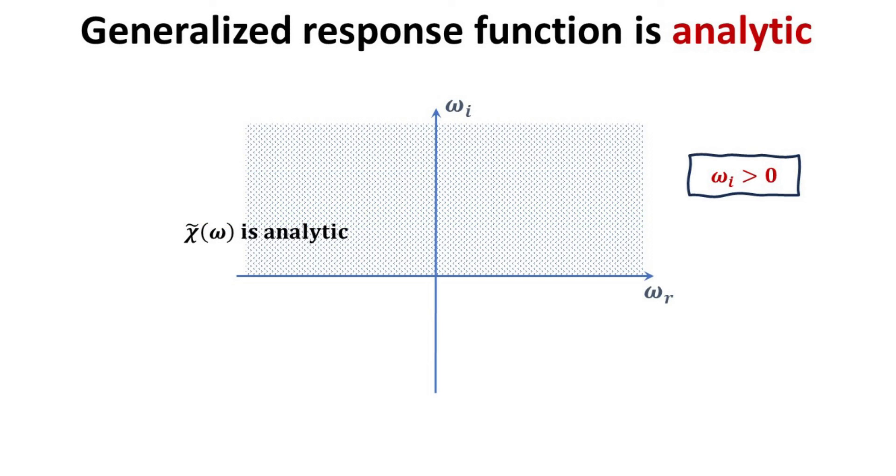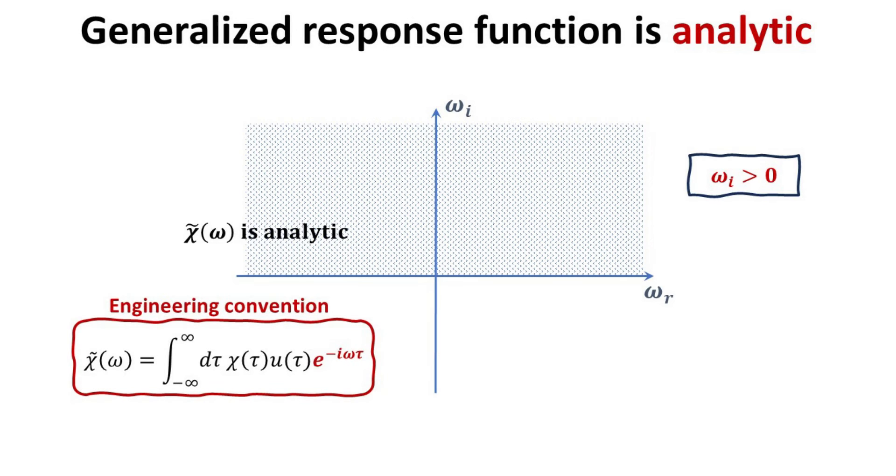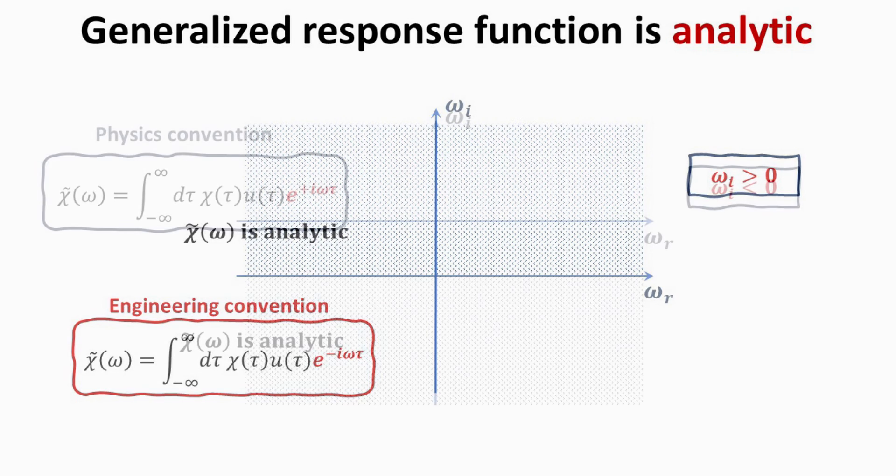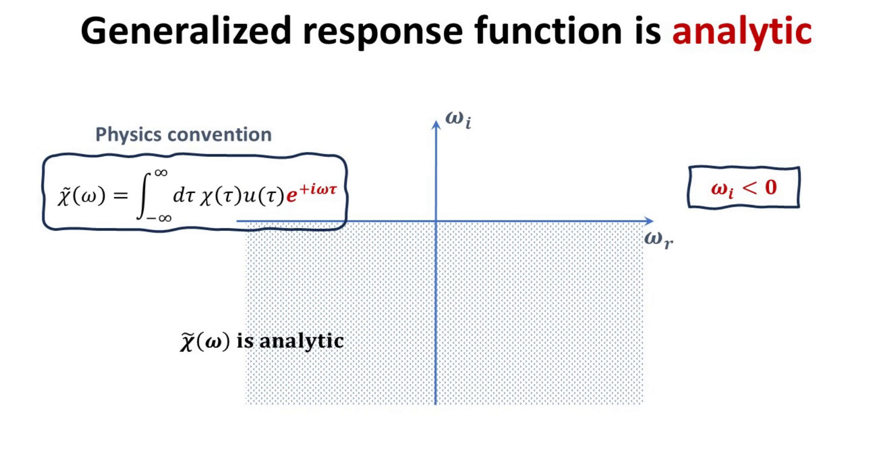Lastly, one can prove that chi tilde is analytic over the upper complex omega plane. In other words, it satisfies the Cauchy-Riemann relations when omega i is positive. Note that we have used the engineering convention for Fourier transform in this case. If we had chosen the physics Fourier transform convention instead, then omega i would have to be negative for the generalized response function to be analytic. These conventions are also known as time conventions in the literature and can often be a source of confusion.